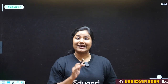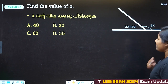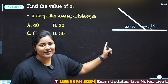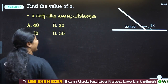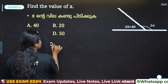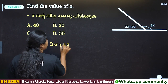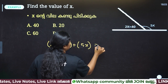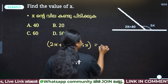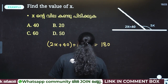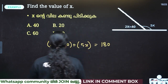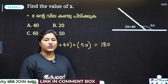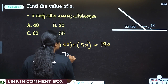Okay, the next question is linear. We have 2x plus 40 equal to — it is equal to 5x. So we will use the linear pair concept. The angle sum is equal to 180 degrees. So 2x plus 5x equals 180. Then we have 7x.